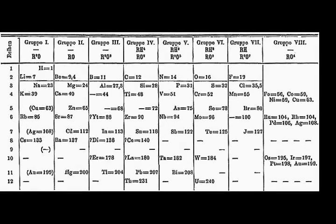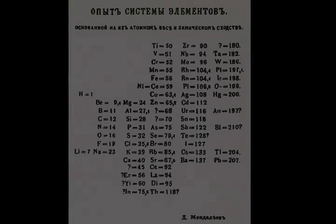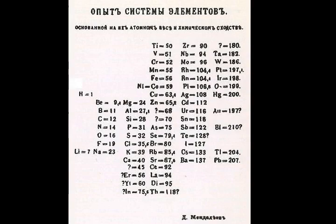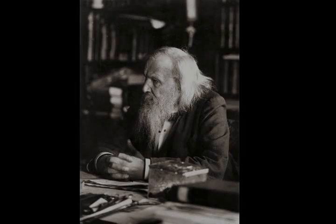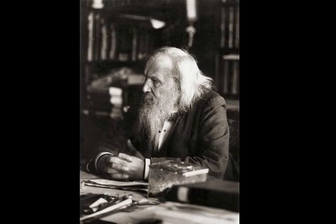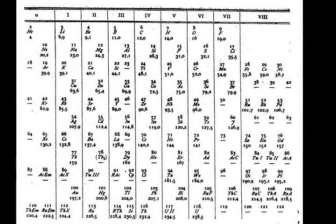A significant controversy arose with elements 102 through 106 in the 1960s and 1970s, as competition arose between a team of American scientists at the Lawrence Berkeley National Laboratory and a team of Soviet scientists at the Joint Institute for Nuclear Research. Each team claimed discovery, and in some cases each proposed their own name for the element, creating an element-naming controversy that lasted decades. IUPAC at first adopted a hands-off approach, preferring to wait and see if a consensus would be forthcoming. It was also the height of the Cold War, and it became clear after some time that this would not happen. As such, IUPAC and the International Union of Pure and Applied Physics created a transfermium working group in 1985 to set out criteria for discovery.